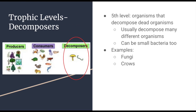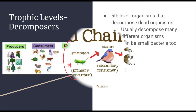The final trophic level are decomposers. These are organisms that decompose dead organisms. They usually decompose many different types of organisms and can be small bacteria as well. These are at the very end of the food chain and allow energy to recycle back to the producer. Some examples of decomposers are fungi, crows, or small bacteria.